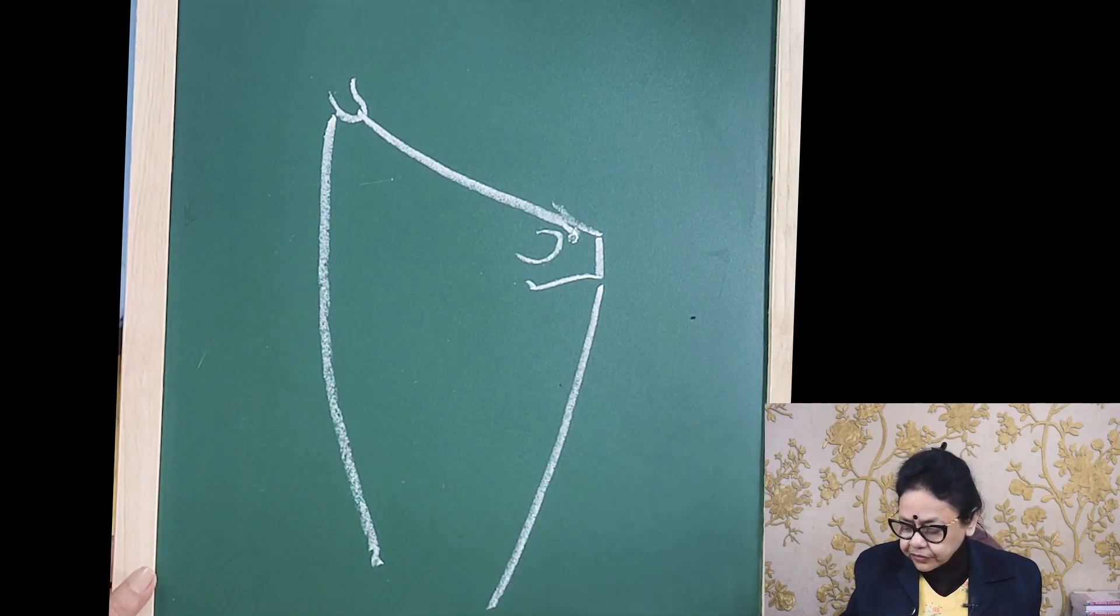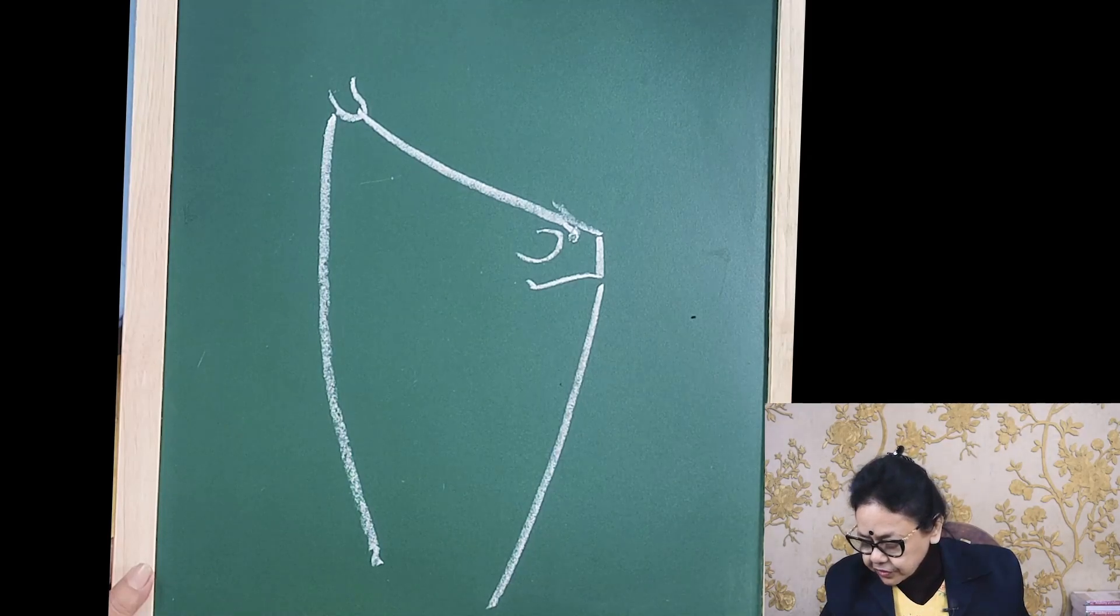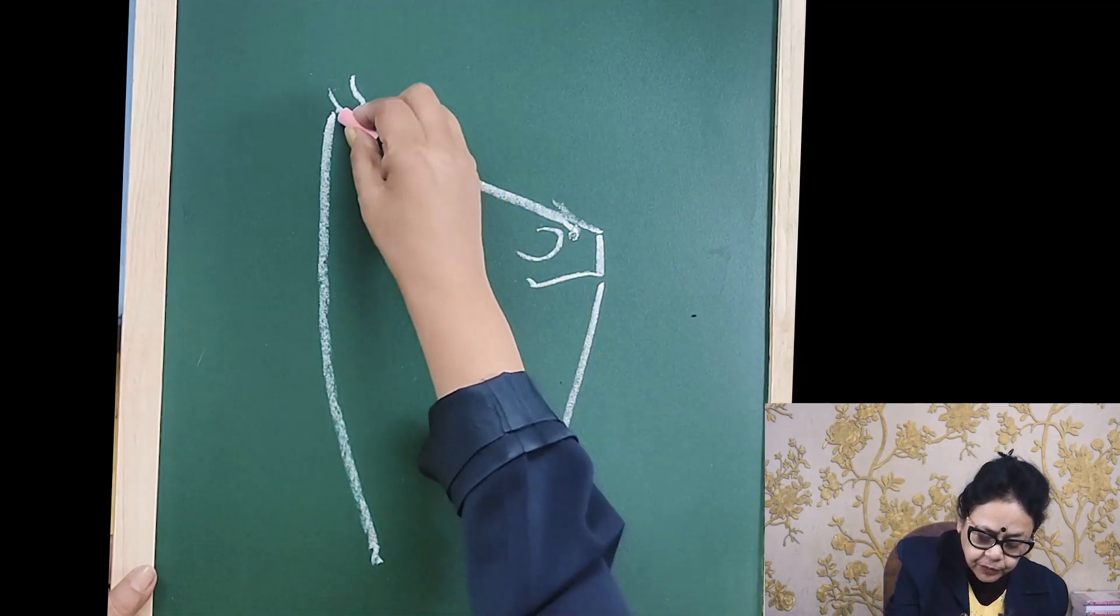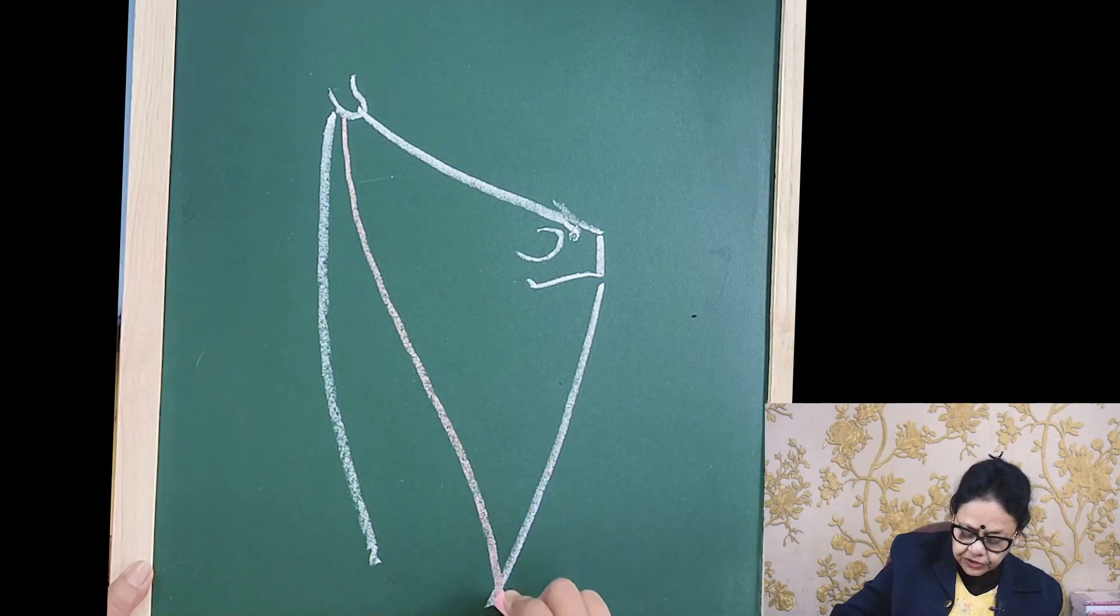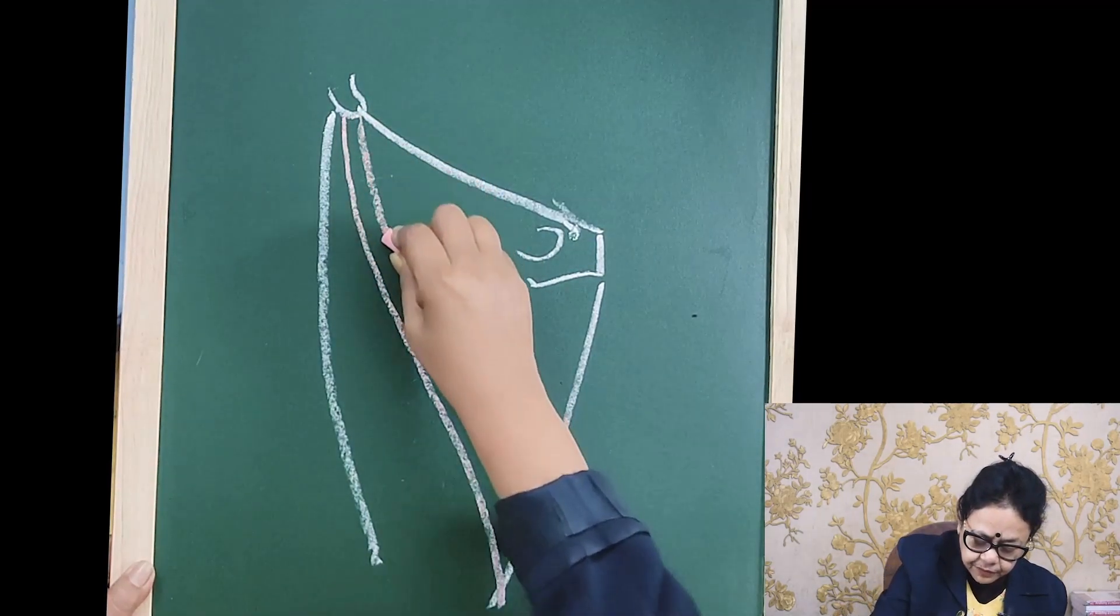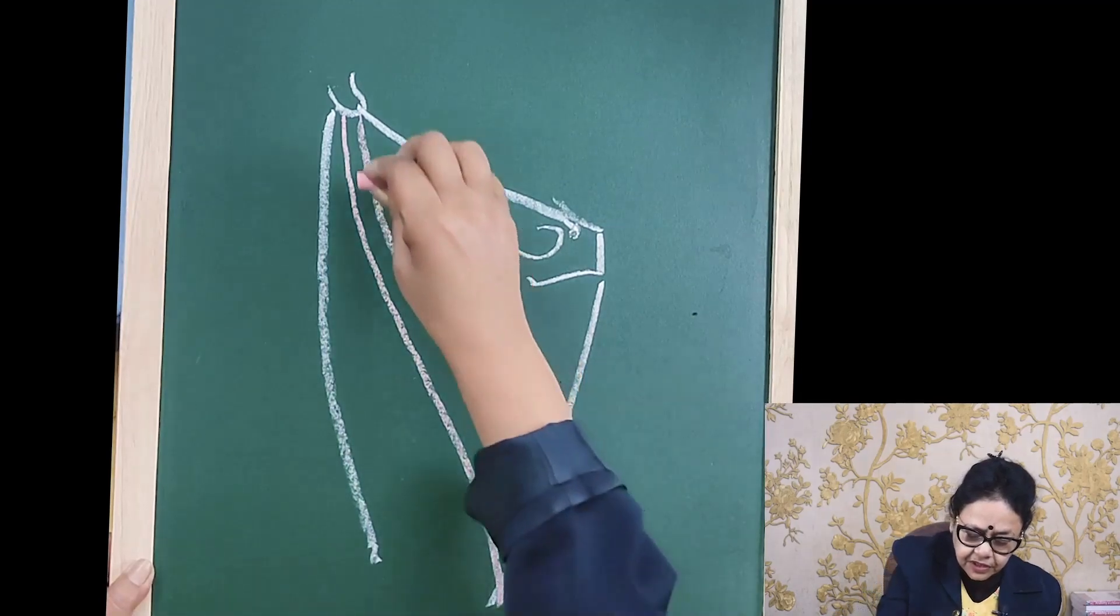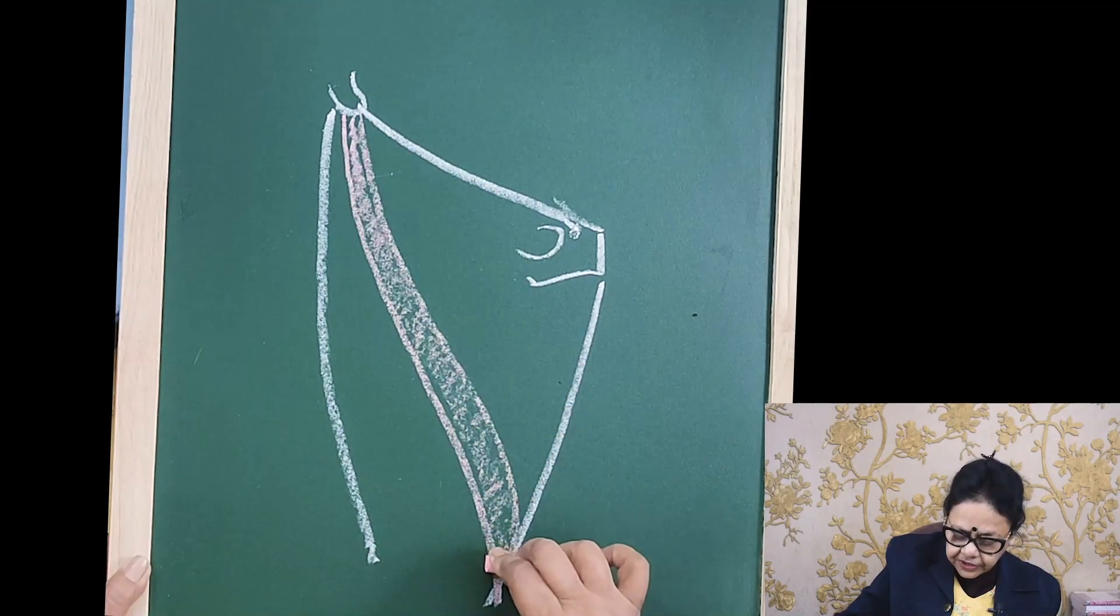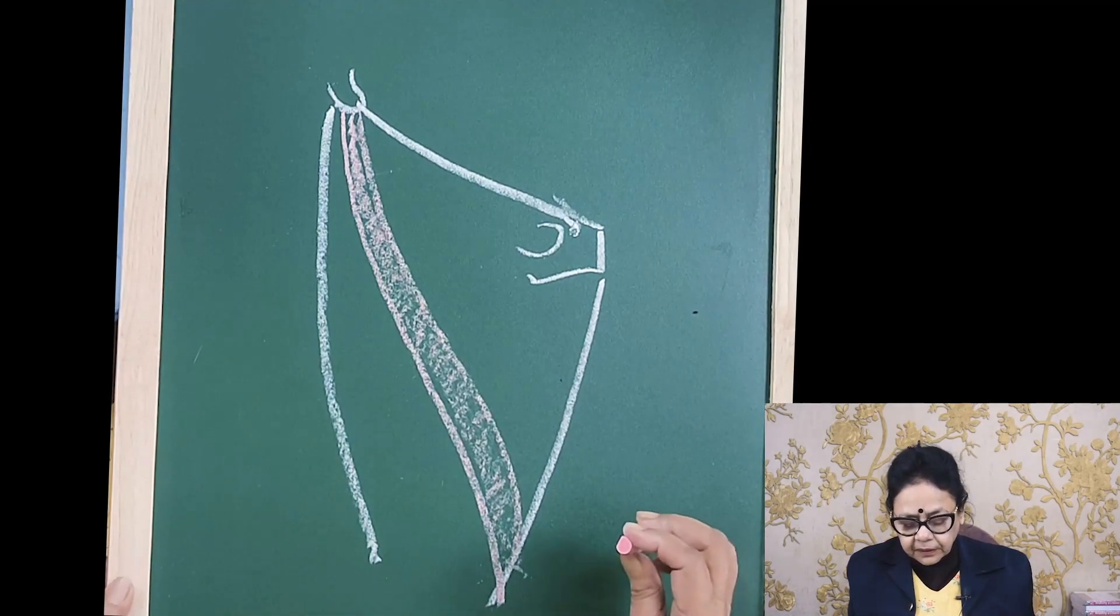Next you will see the muscle arises from the anterior superior spine, that is the sartorius. Sartorius, that is the flat muscle. This is the sartorius and it is actually inserted into the tibia.